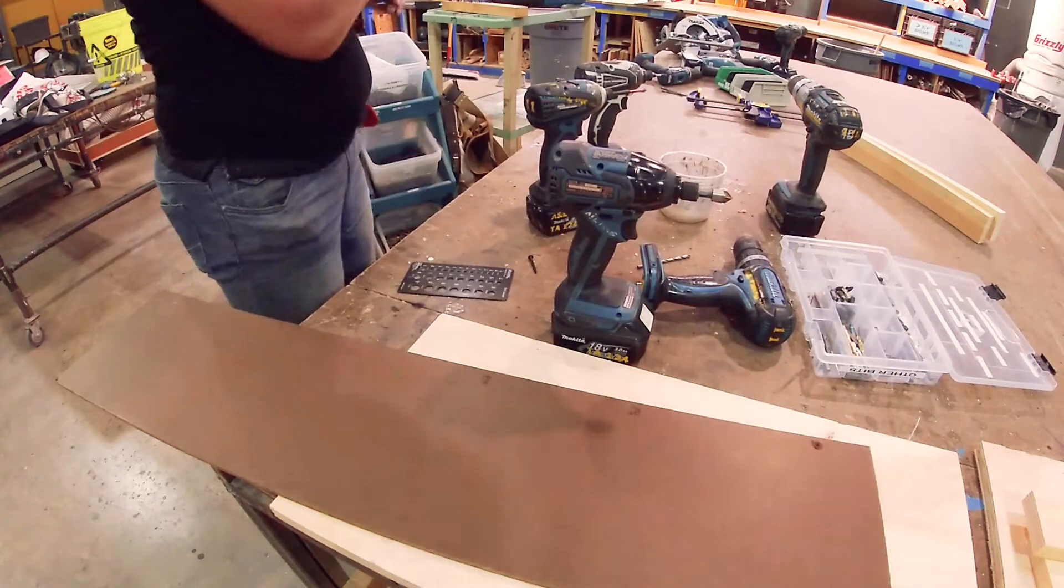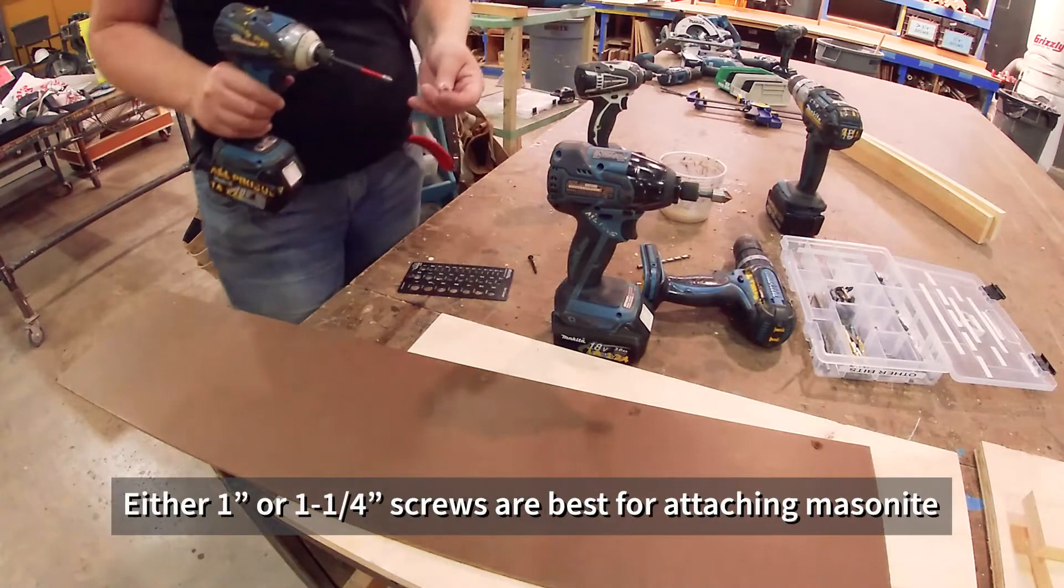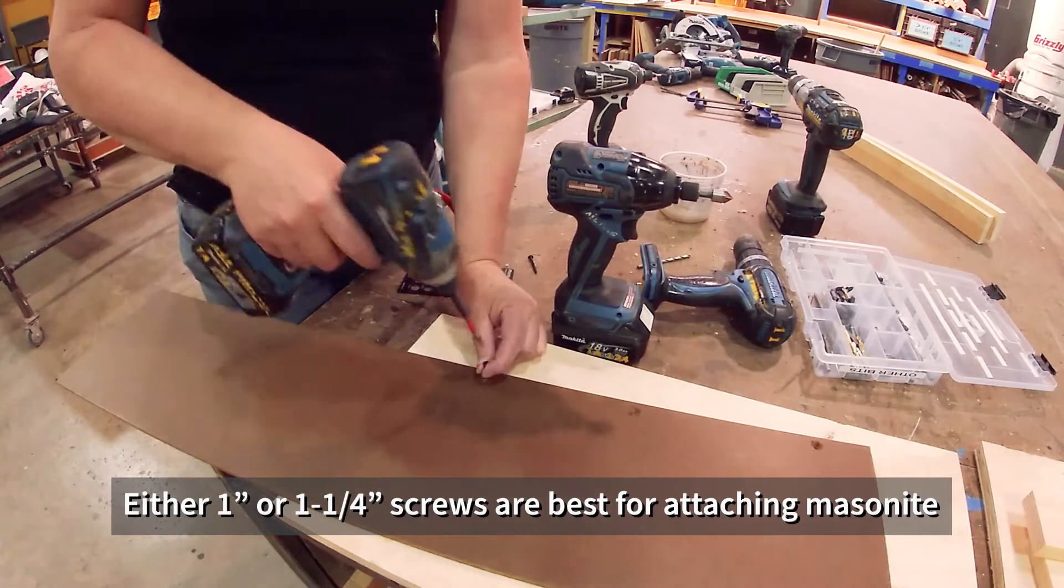And then when you're driving the screws, usually you're going to use the one inch or the one and a quarter inch screws to attach your masonite to your platform.